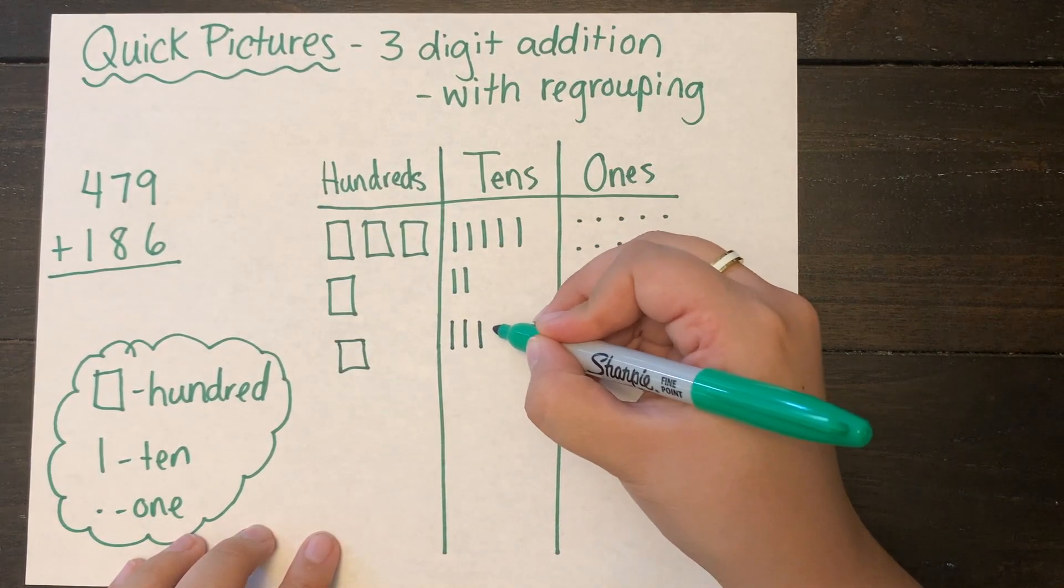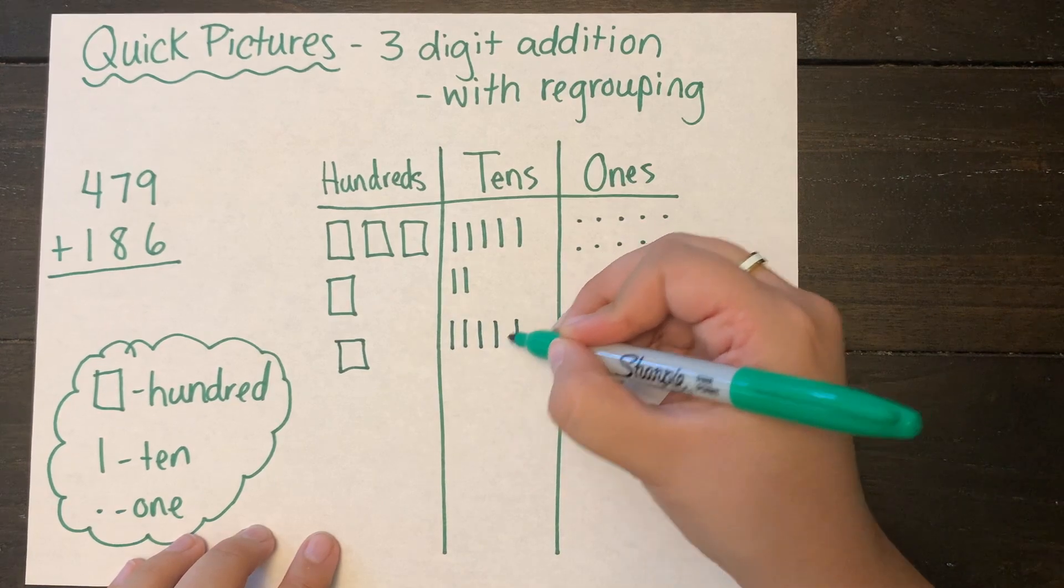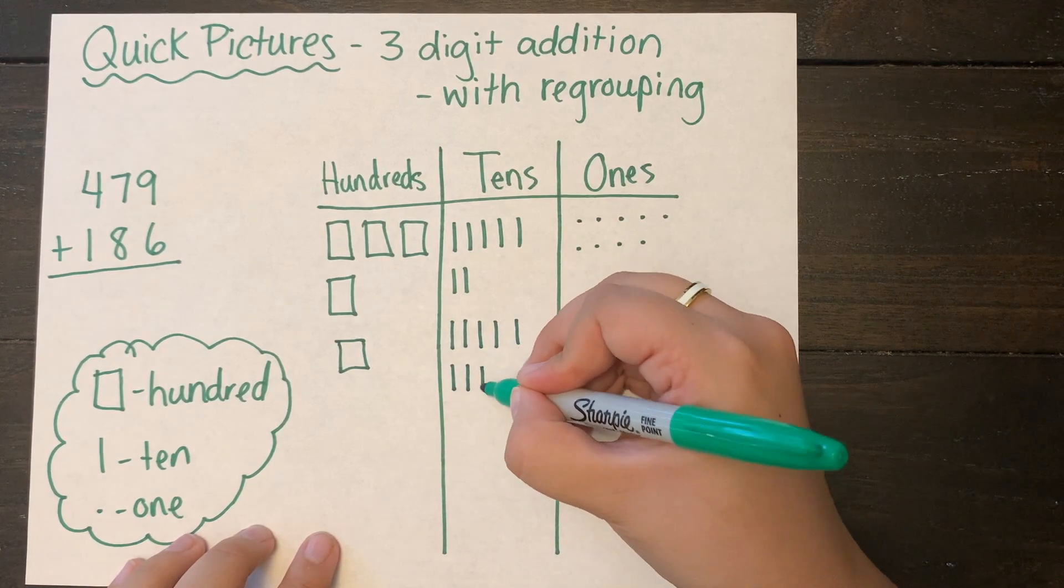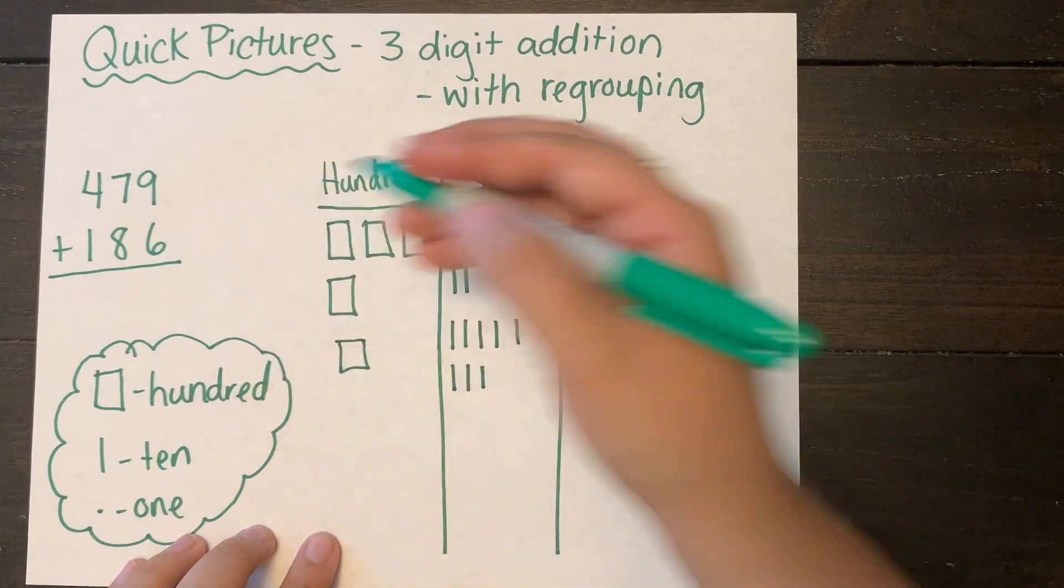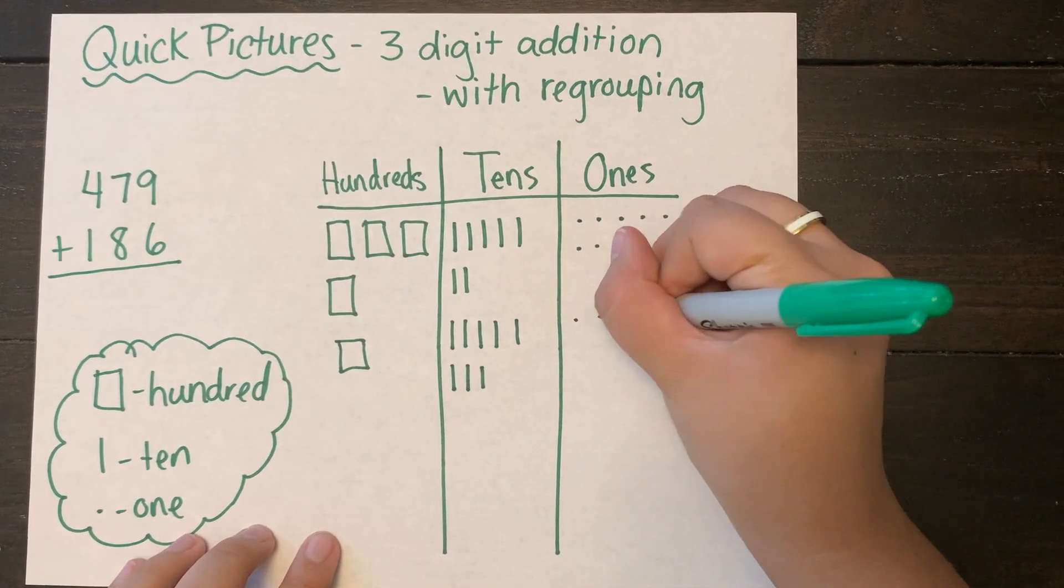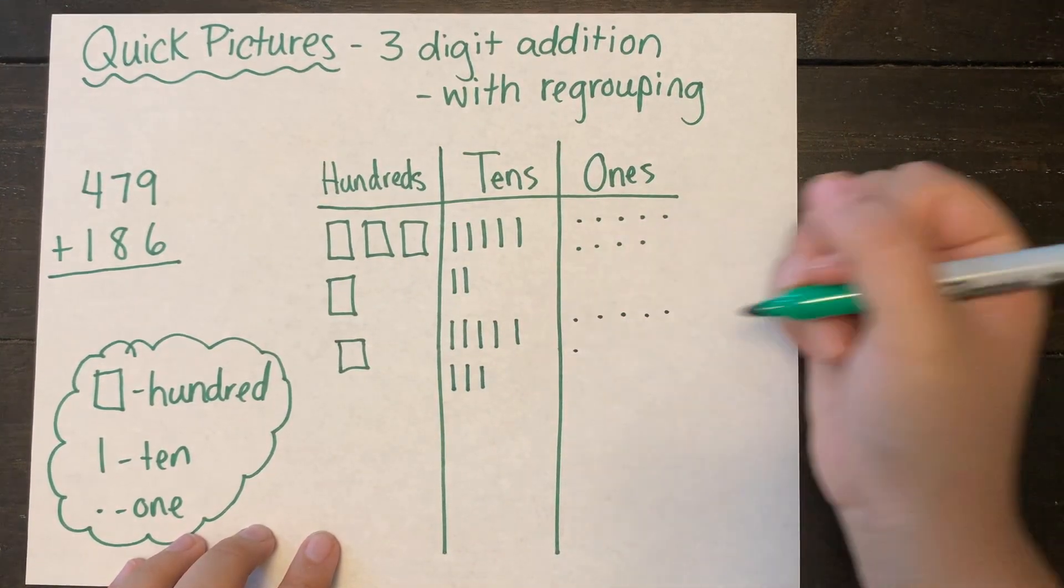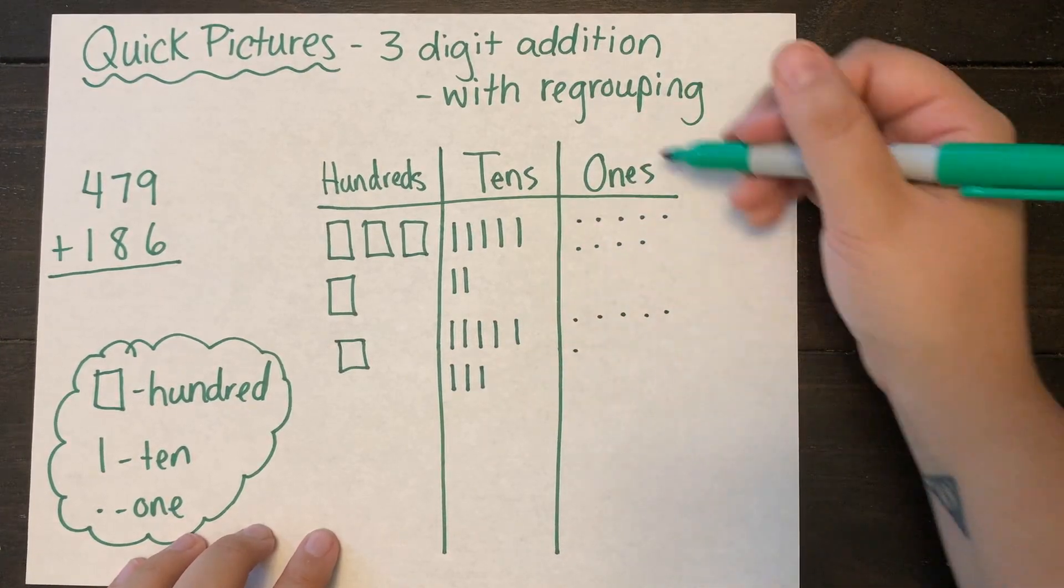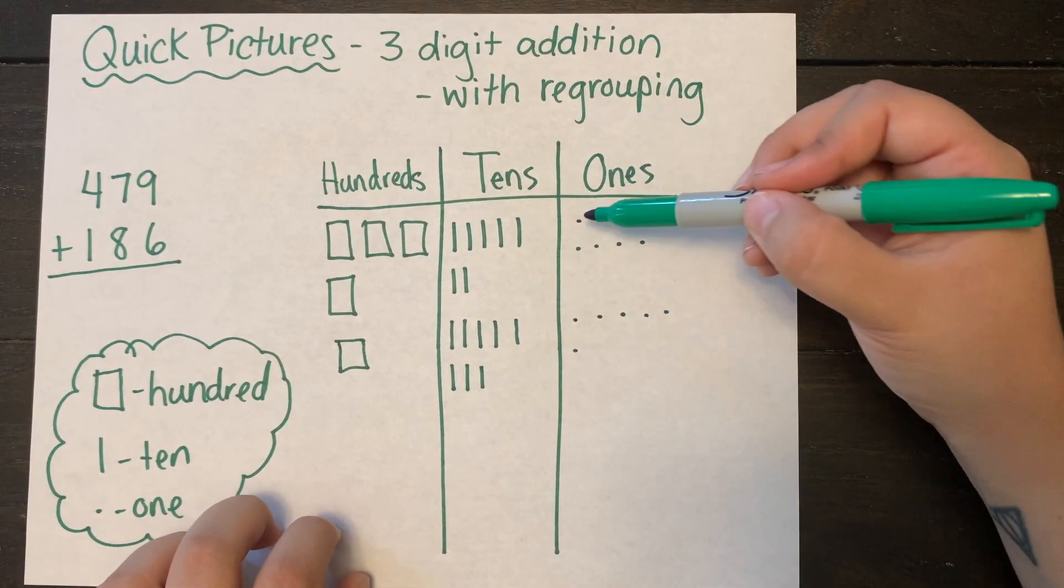Especially with my tens and ones, I'm sure you've noticed, I'd like to try to draw them in rows of five. It helps with counting. If you choose to skip count by fives, this helps you subitize those numbers better.